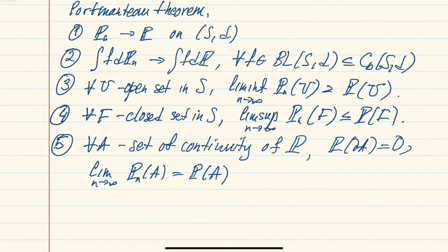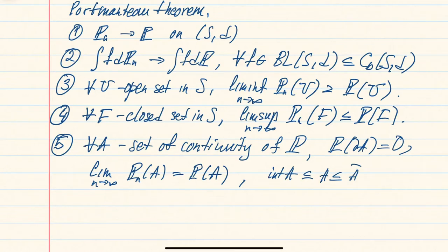The fact that three and four imply five is also obvious: you consider the interior of your set, which is open, and the closure, which is closed. You already have the statement for open and closed sets in the right direction. Because the probability of the boundary is zero, the interior and closure have the same limiting probability, so you get just a limit.